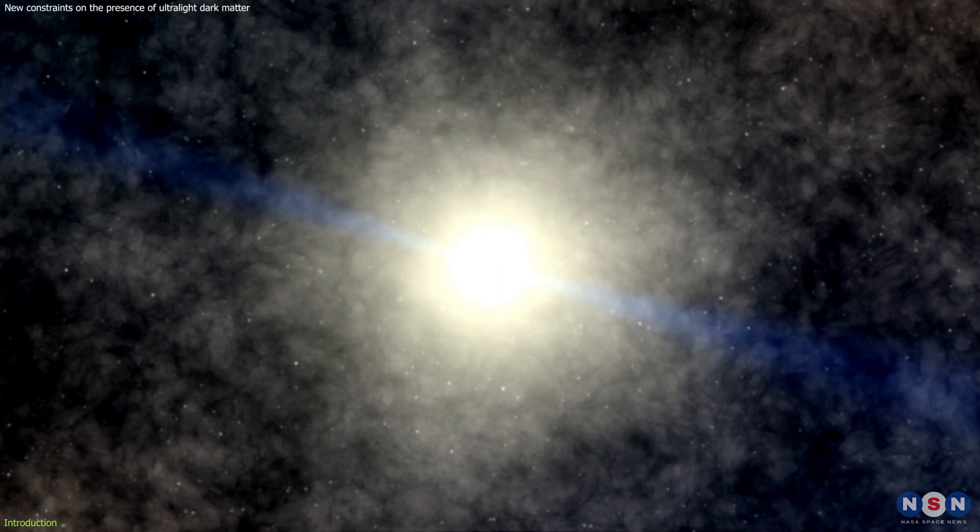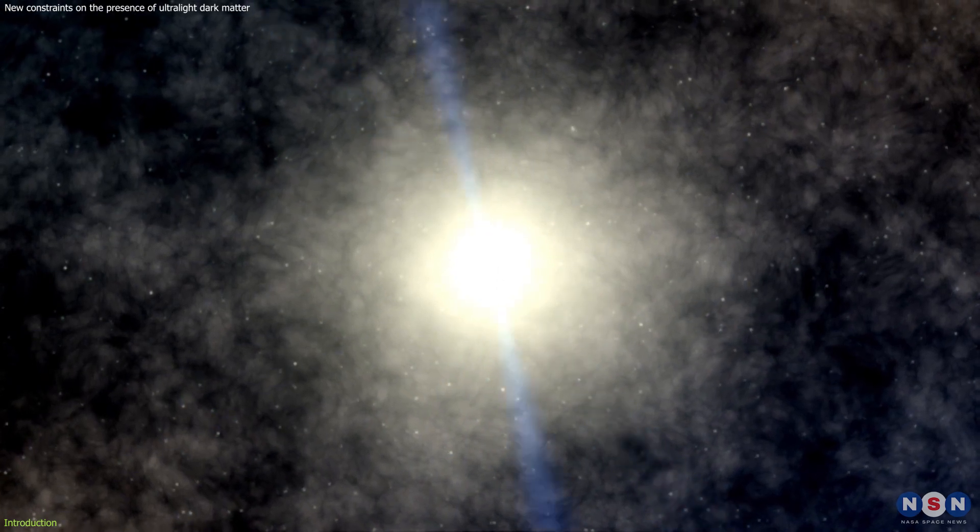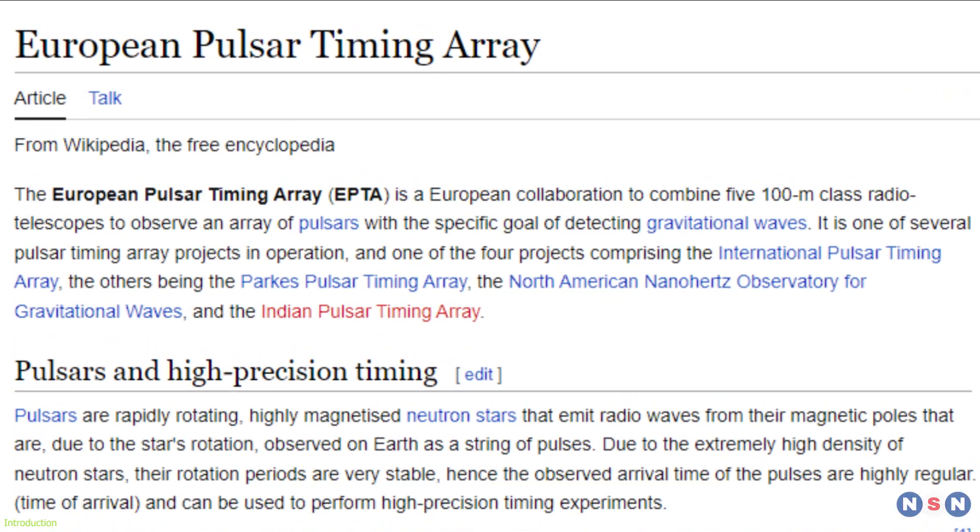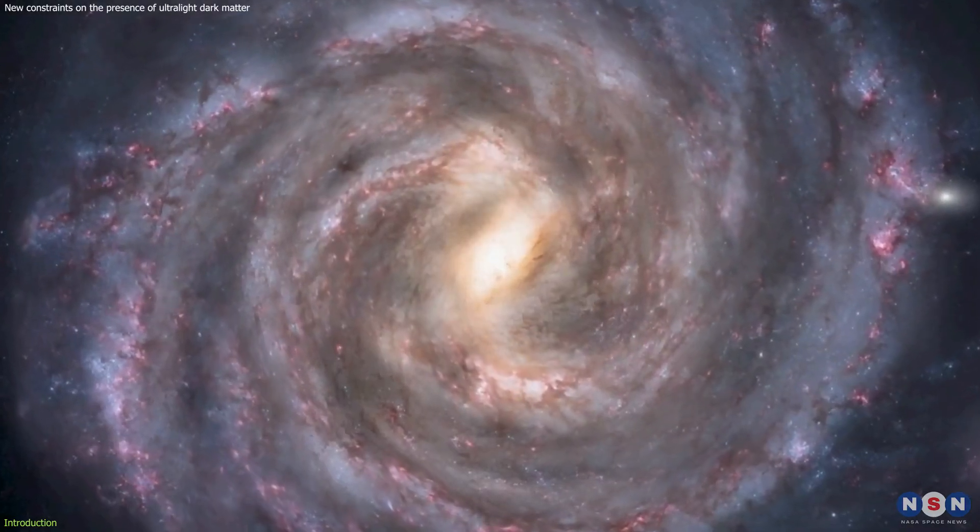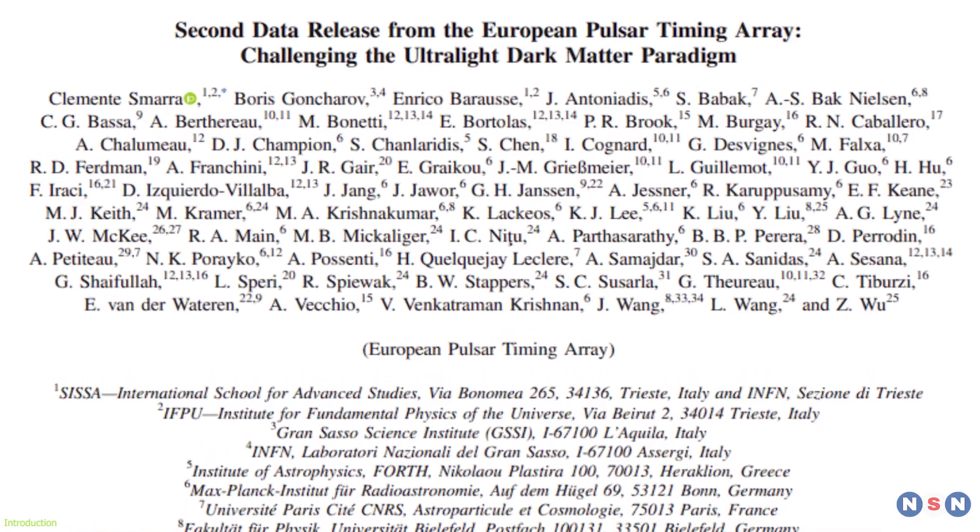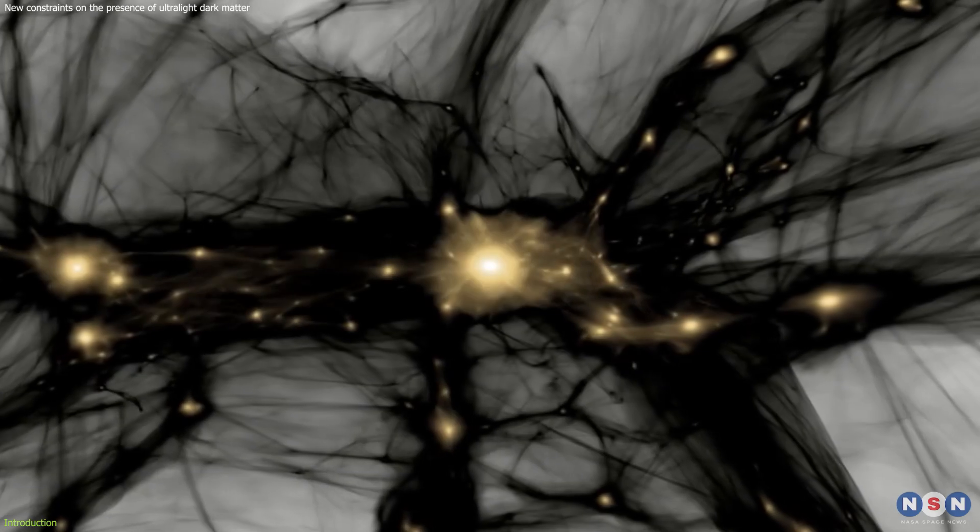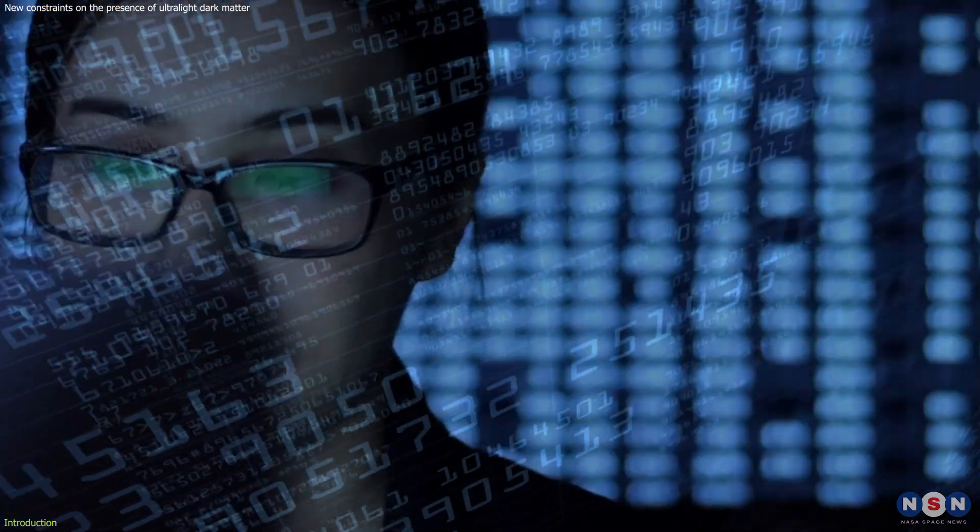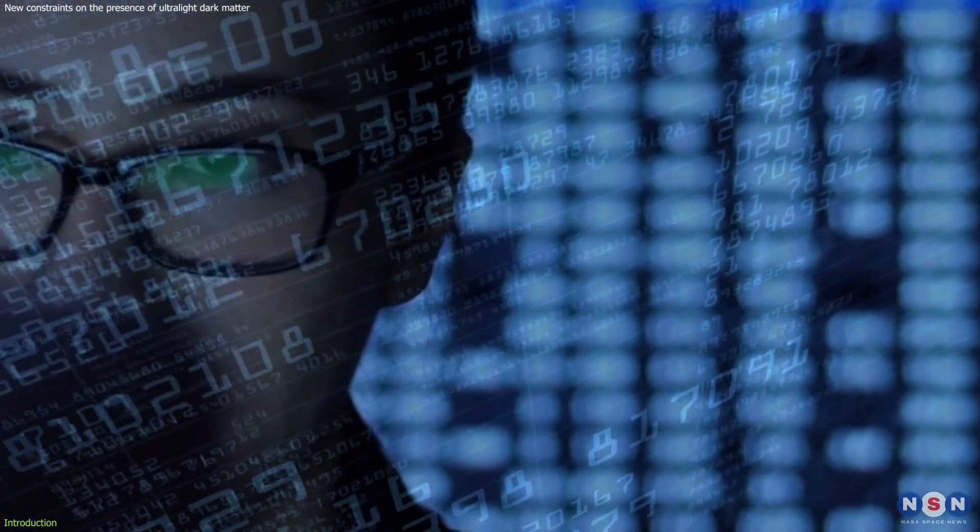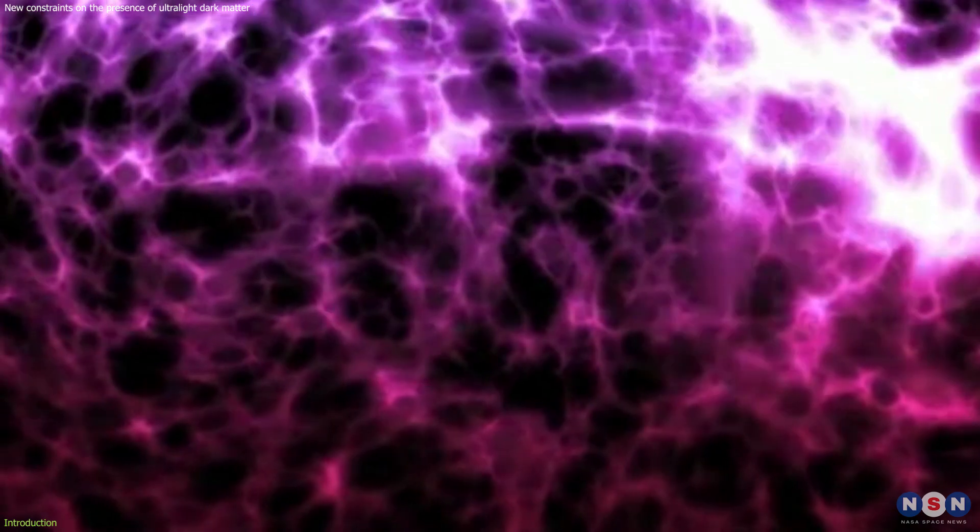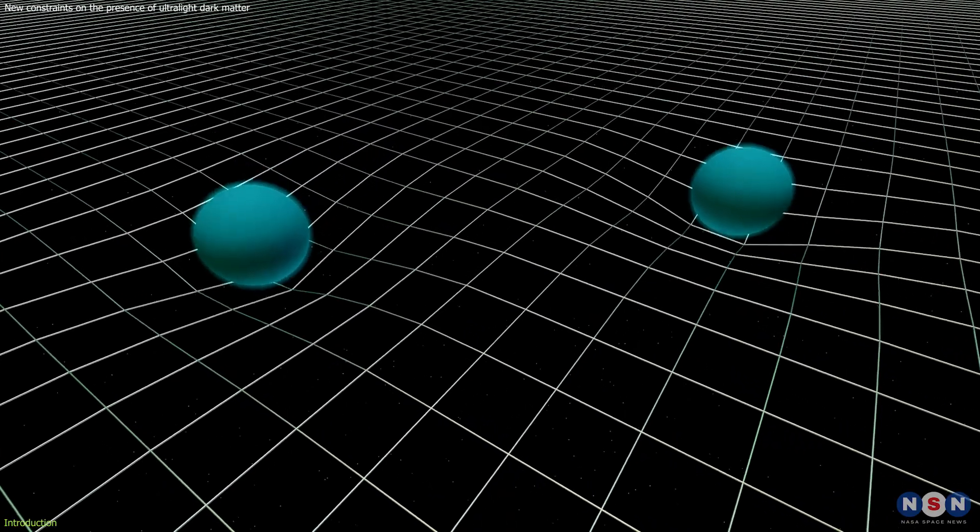I will explain how these particles could affect the timing of pulsars, how the researchers used the European Pulsar Timing Array (EPTA) to look for them in the Milky Way galaxy, and what they found. I will also discuss the implications and limitations of this study and what it means for the future of dark matter research. The main takeaway is that the researchers' data does not support the ultralight dark matter paradigm, and that other types of dark matter candidates or alternative theories of gravity should be considered.